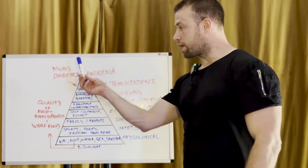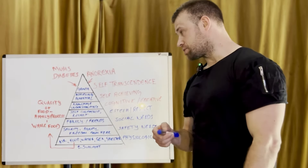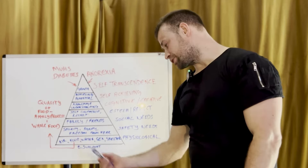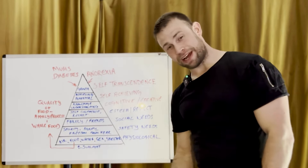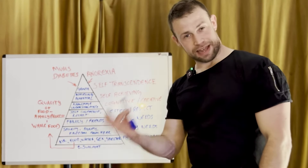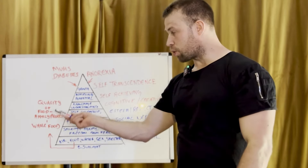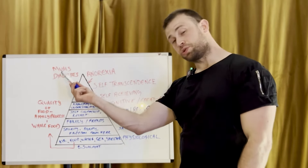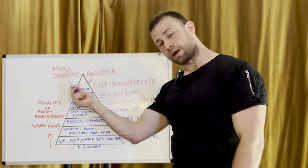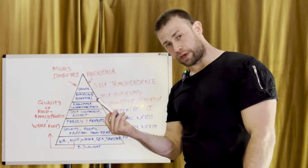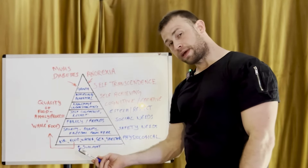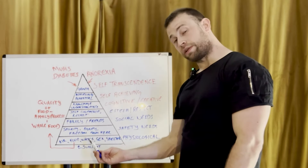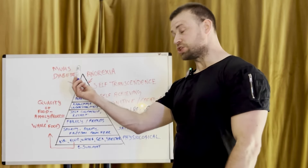Let's go back to the scenario of my mum and her diabetes. She retired at 66 and was diagnosed with type 2 diabetes at 66. She had air, access to water, shelter, she'd already procreated, sunlight was fine — and she also had food. However, her food, or the quality of her food, was the reason why she developed type 2 diabetes. My mum's diabetes was something I wanted to help with — that was my goal. So I looked at her food and restructured her diet and her nutrition plan.